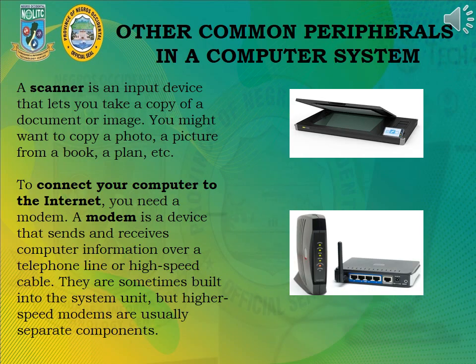Other common peripherals in a computer system: A scanner is an input device that lets you take a copy of a document or image — for example, a photo, a picture from a book, or a plan. To connect your computer to the internet, you need a modem. A modem is a device that sends and receives computer information over a telephone line or high-speed cable. They are sometimes built into the system unit, but higher-speed modems are usually separate components.